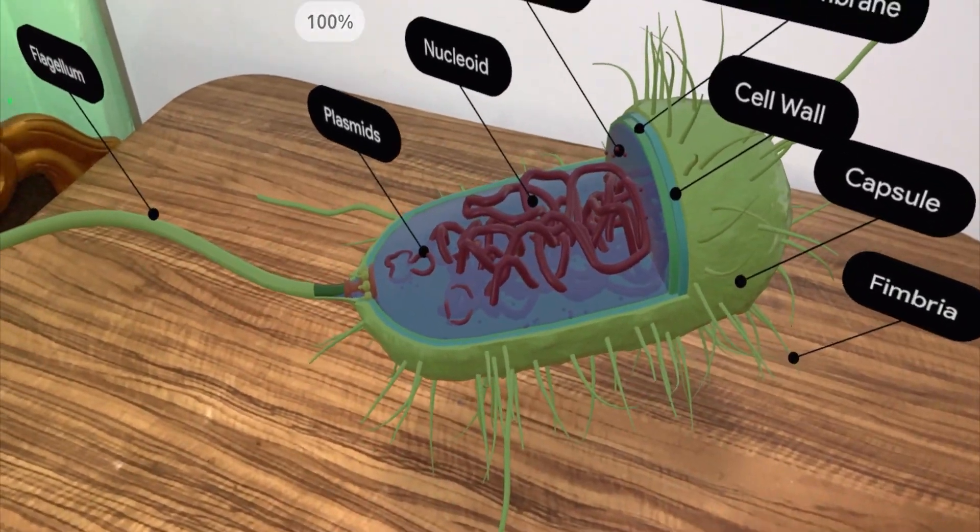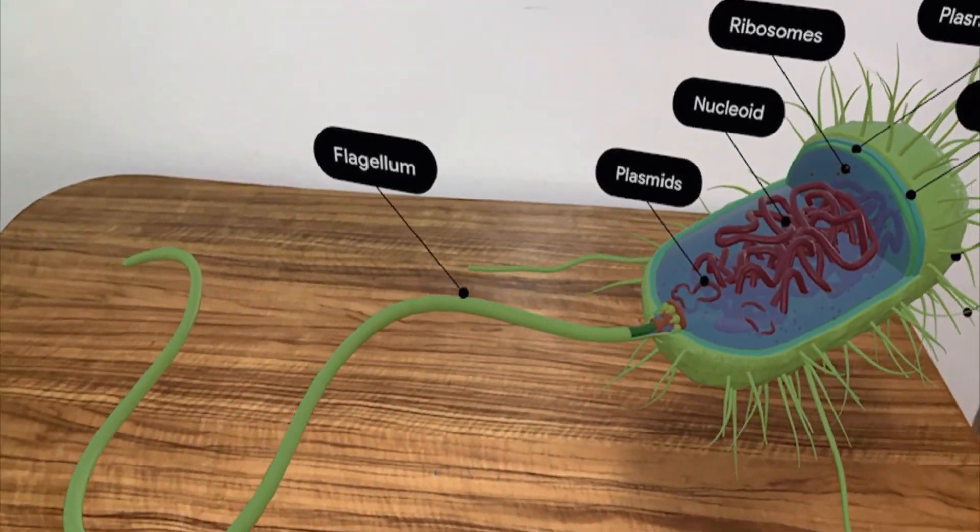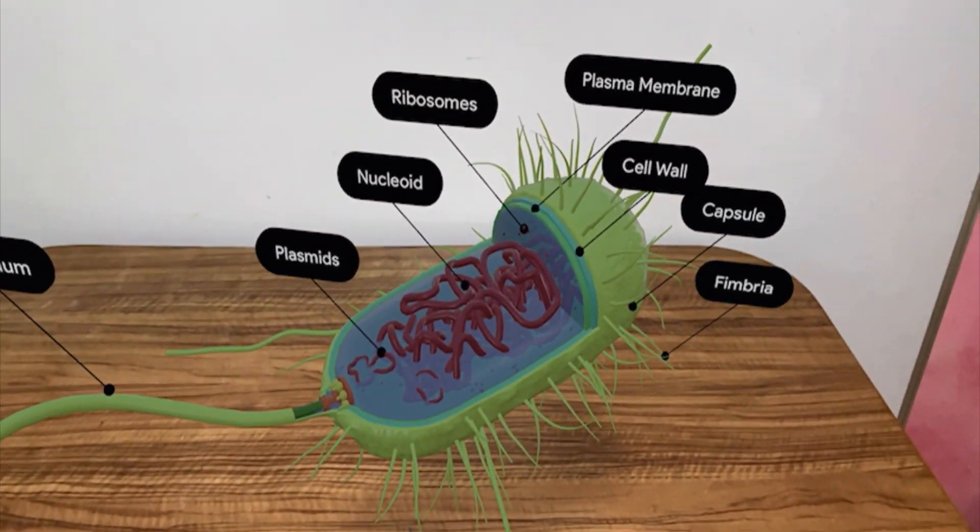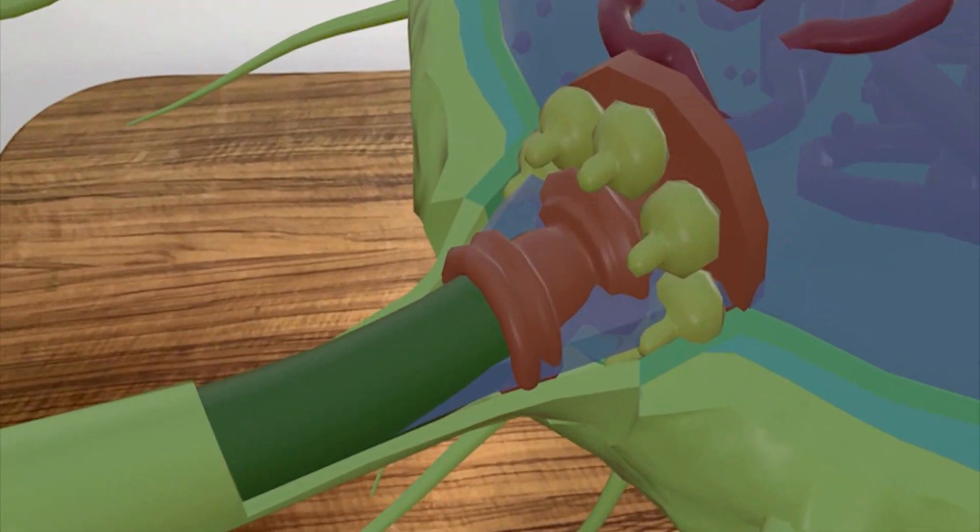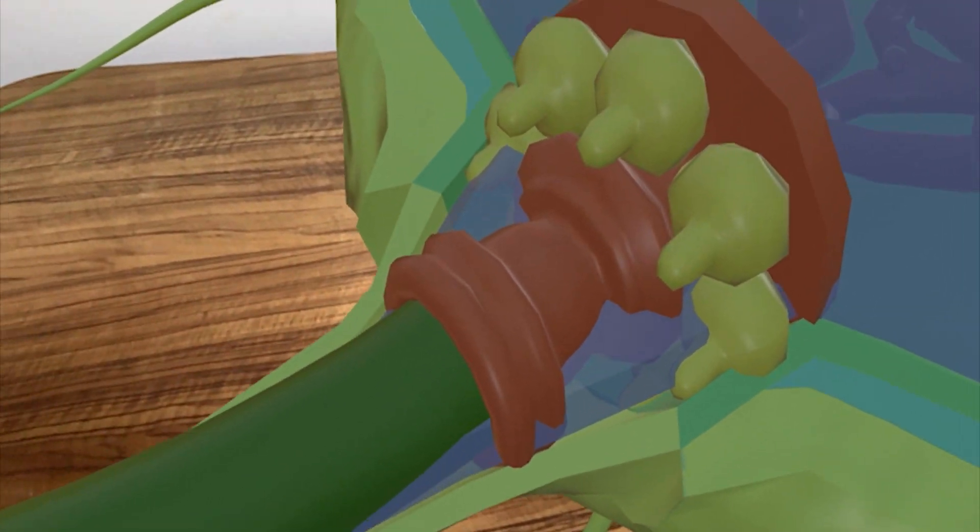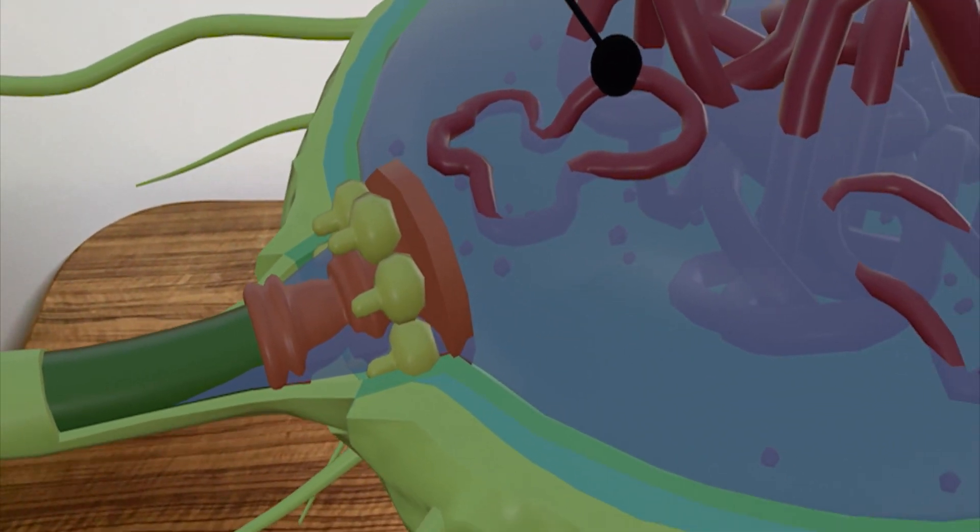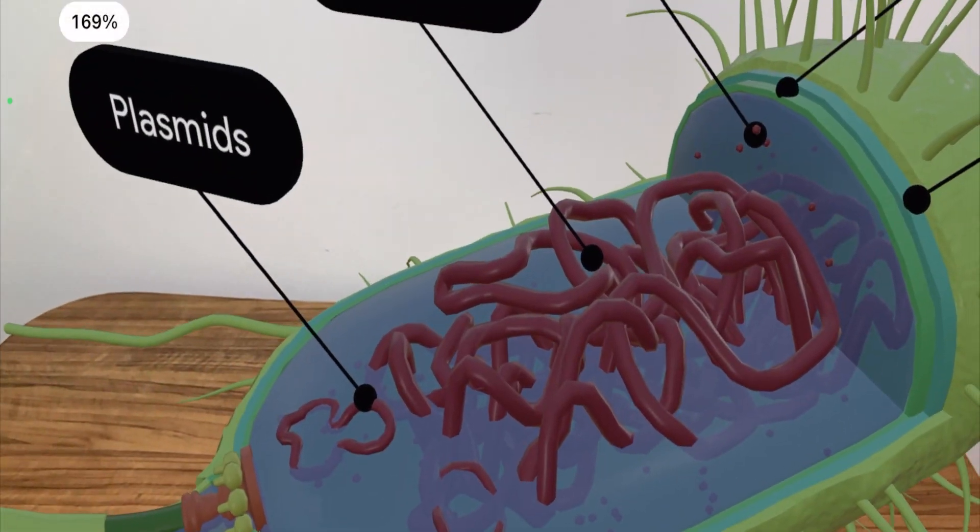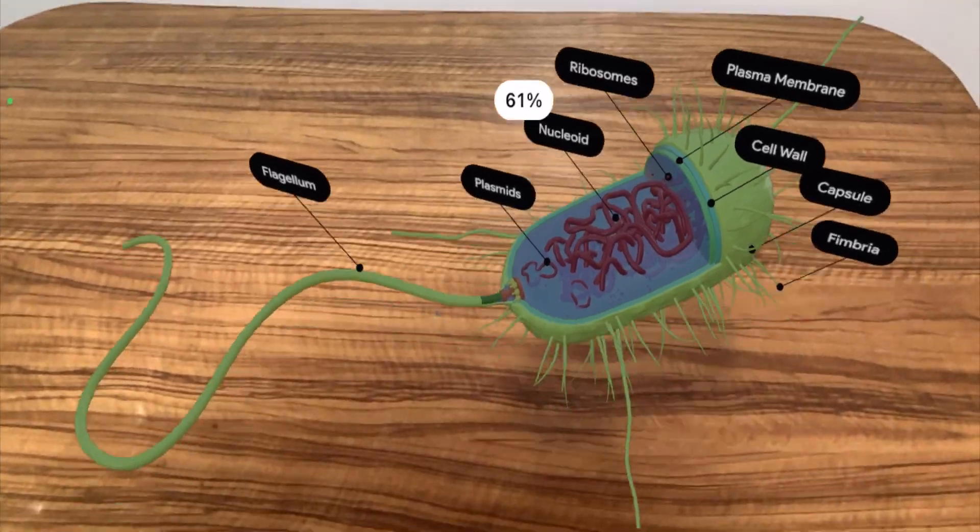So this is the awesome way that you can use augmented reality to study the bacterial structure or the prokaryotic cell structure. You can see the motor protein beautiful over here which is the flagellar motor which helps the flagella to rotate and move and help in the movement of the bacterial cell.